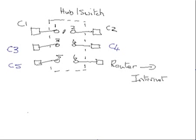Now let's take the scenario where the device is functioning as a hub, and we're going to have computer one talking to the router and to the internet. Computer one on port one is connected to port six, but because it's a hub, port one is not just connected to port six — it's connected to all other ports. So there's a connection between port one and port two, one and four, one and three, one and five, as well as one and six. What that means is, while computer one is talking to the router, none of the other computers can talk to the router, and none of the other computers can talk to each other.